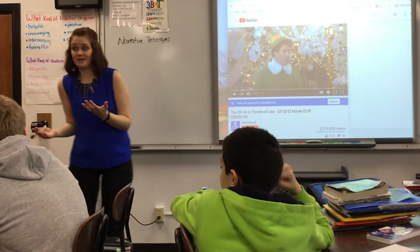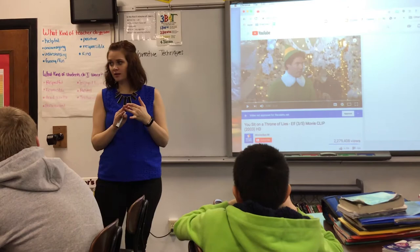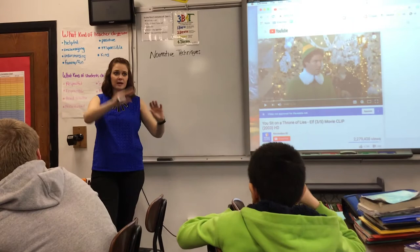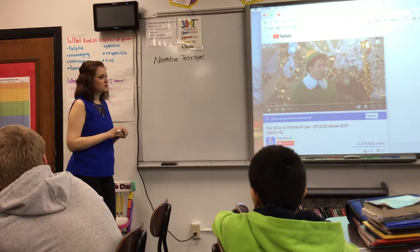We usually have a thesis, a hook, main points, topic sentences. Do we follow any of that when we're writing a story, especially a children's story? No. We're just following the events and the story — a plot line, right? So there are going to be some main events, but we need to use some narrative techniques to do our purpose for this.